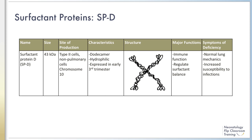Surfactant protein D is expressed early in the third trimester, and its role is to regulate surfactant balance. Null mice for surfactant protein D are four times more likely to have phospholipids and macrophages with a foamy appearance. This foamy appearance has been implicated in sustaining bacteria and contributing to tissue pathology.